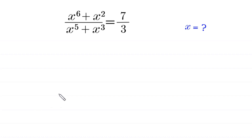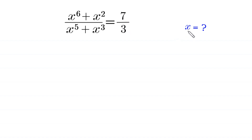Hello, welcome to how to solve this very nice algebra equation. x to the power 6 plus x squared over x to the power 5 plus x cubed is equal to 7 over 3. We need to find all possible values of x.